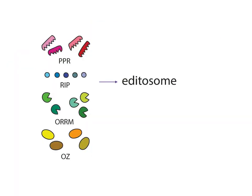PPR proteins and factors from the other three families form the editing complex named the editosome. Surprisingly, the editosome is very diverse, not only because of the PPR proteins, but also due to the non-PPR proteins.